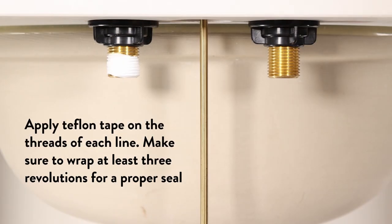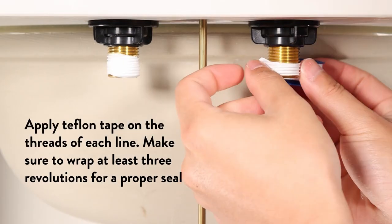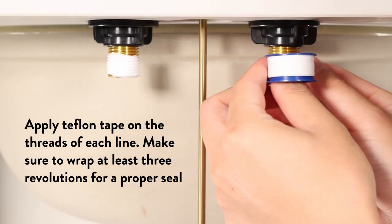Apply Teflon tape on the threads of each line. Make sure to wrap at least three revolutions for a proper seal.